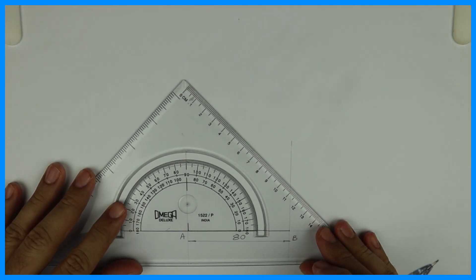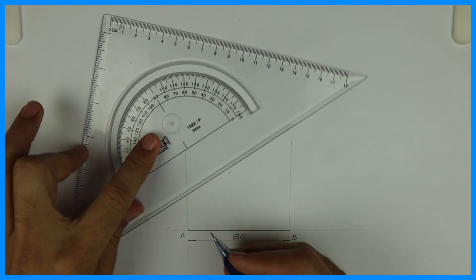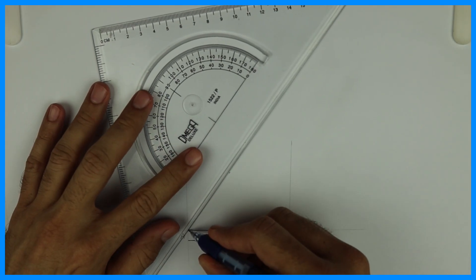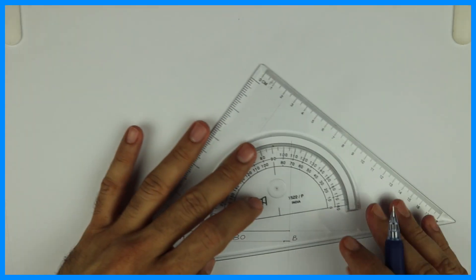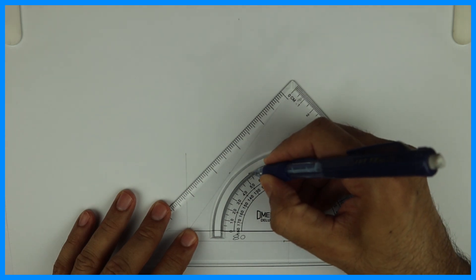After that from point A we'll take 54 degrees. We are drawing a pentagon so we are taking 54 degrees from A, and we'll take 54 degrees from B. Wherever they intersect, that will be point O.